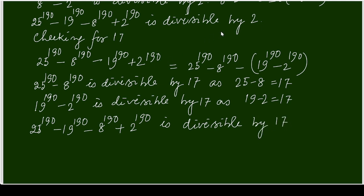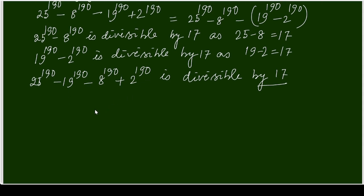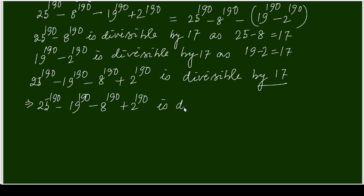Since the expression is divisible by both 2 and 17, it is divisible by 34. So 25^190 minus 19^190 minus 8^190 plus 2^190 is divisible by 34. Next, let's check divisibility by 7.